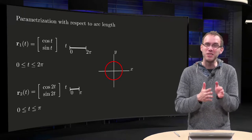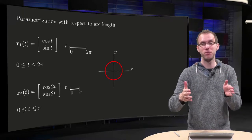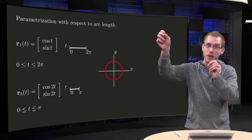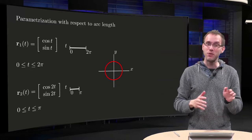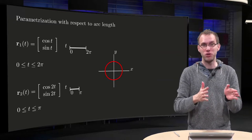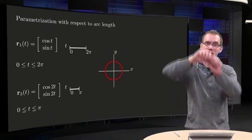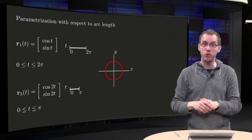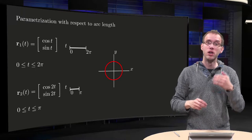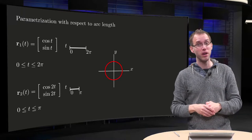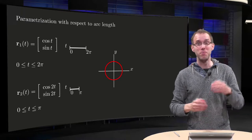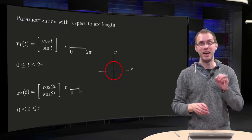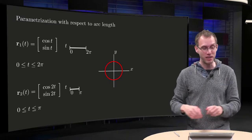Wouldn't it be nice if one step in the parameter domain would correspond to one step along the curve? In this way lengths are conserved — the length in the parameter domain is the same as the length on the curve. Since this parameterization is possible, it is called parameterization with respect to arc length. In this video you will learn how to find it.